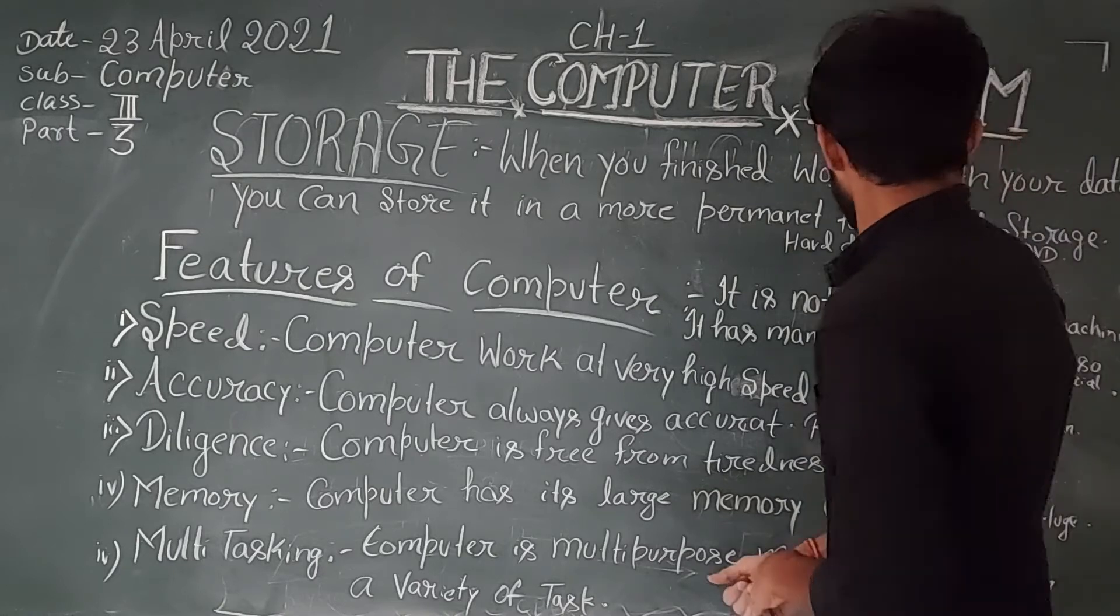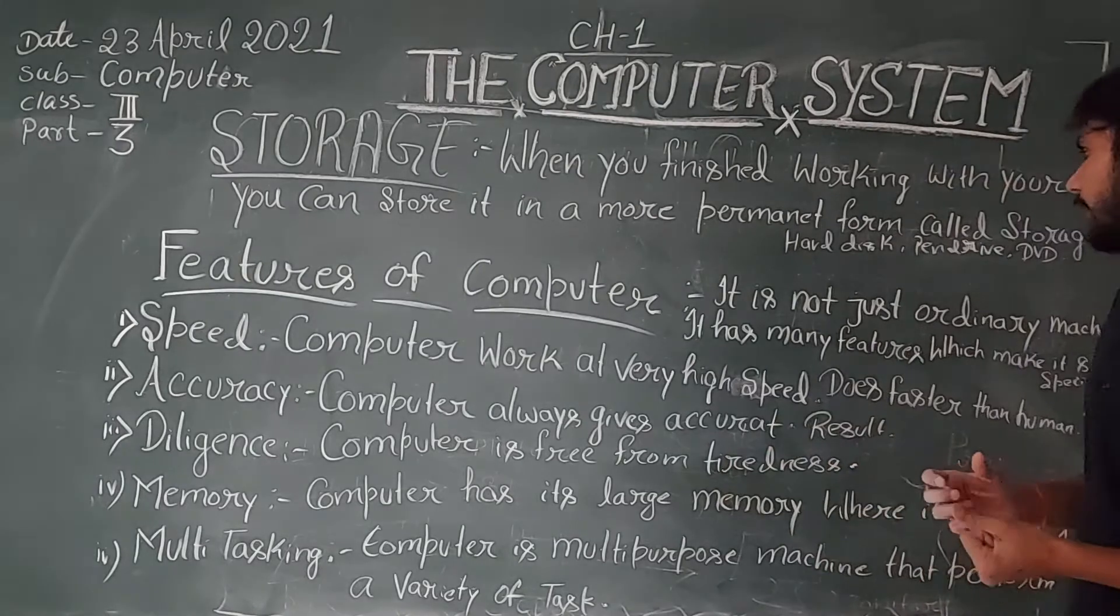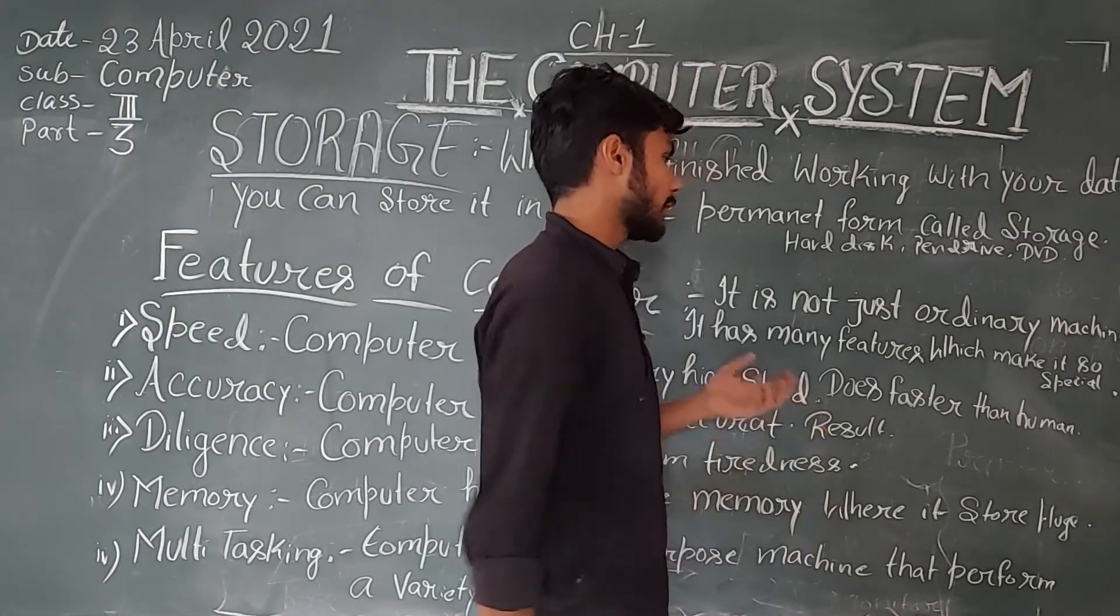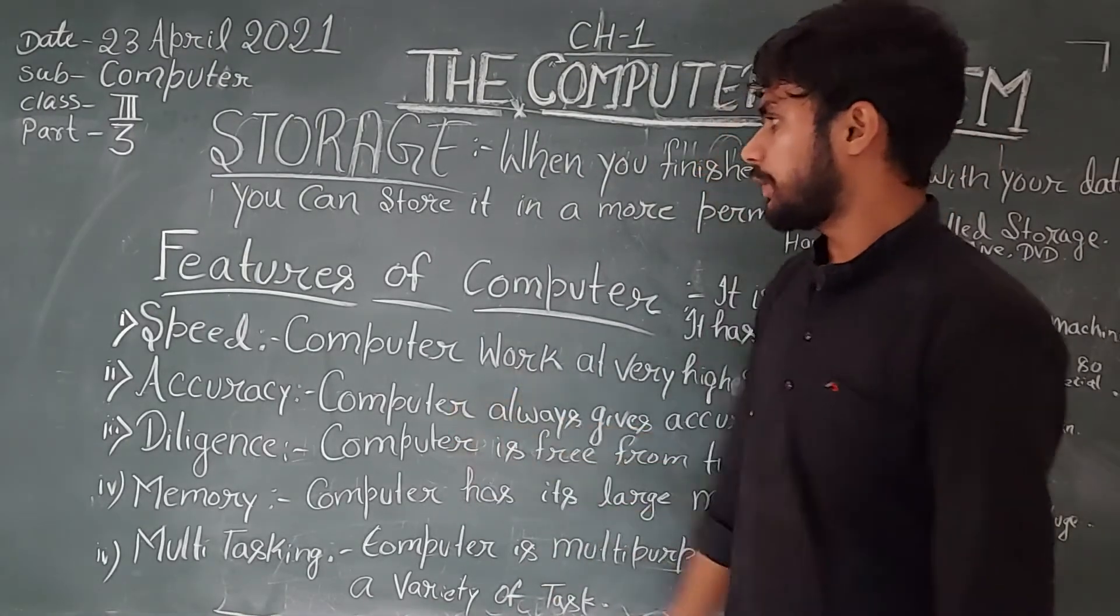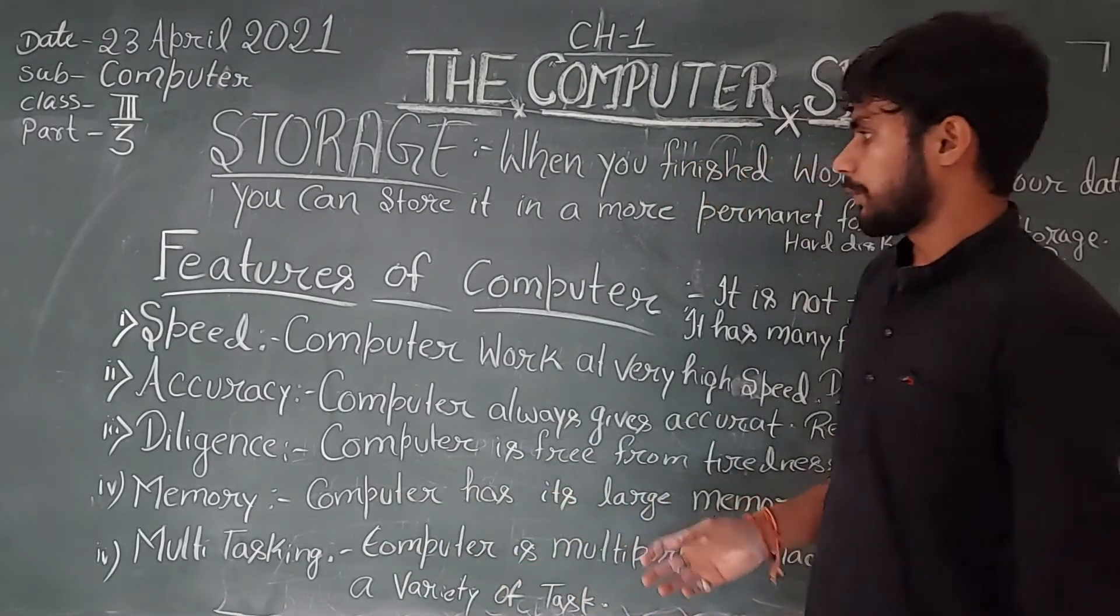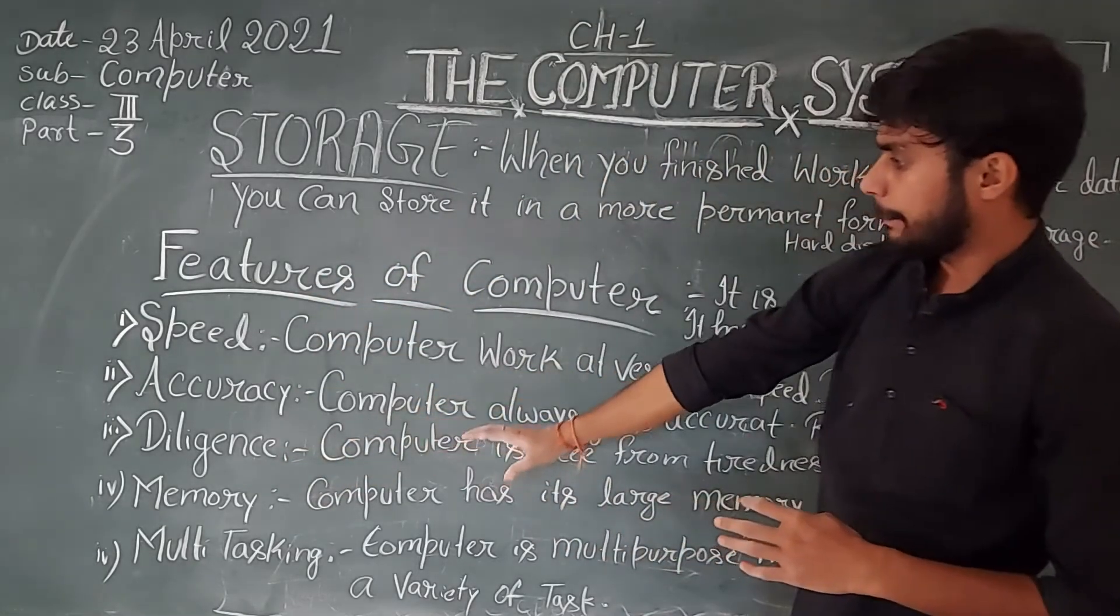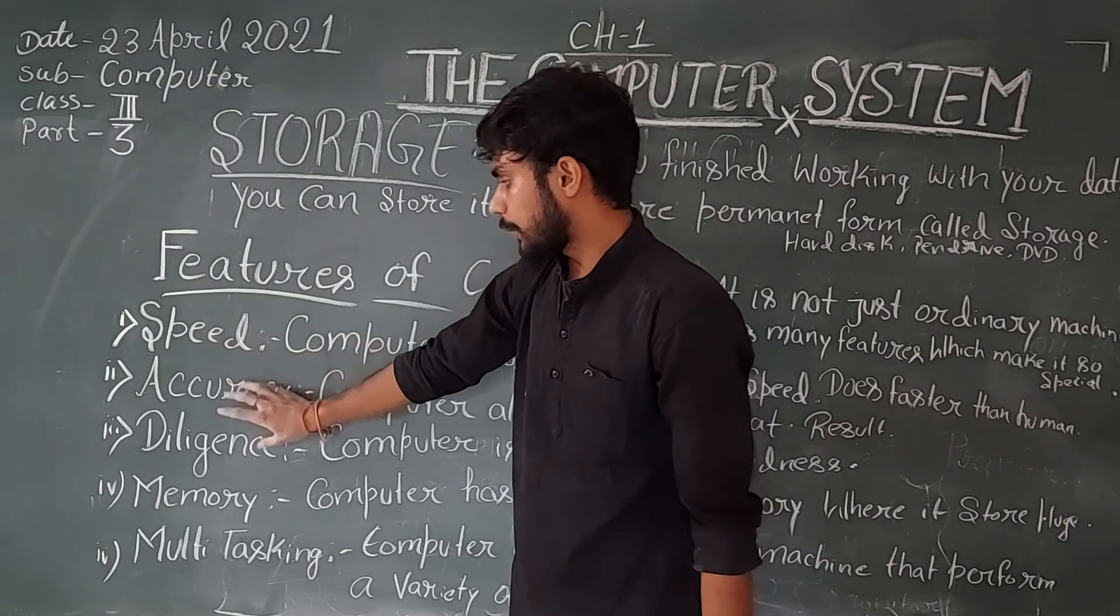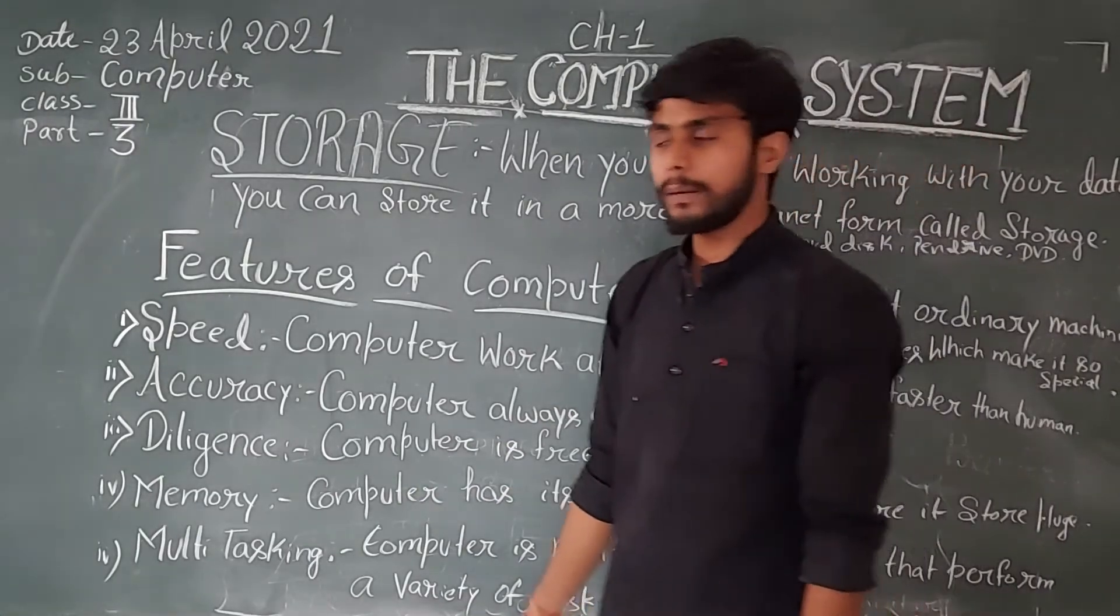First of all, what is the computer? Just like an extraordinary machine. It has some specific features that makes it so special. There are many specific features that make it special from other machines. First of all, we have 5 features. First of all, speed. Second, accuracy. Third, diligence. Memory, as well as multi-tasking.